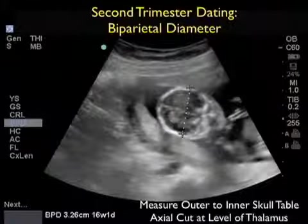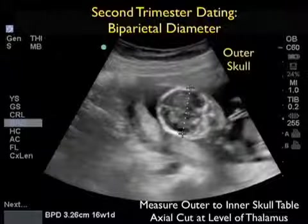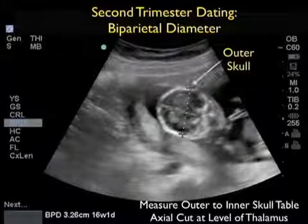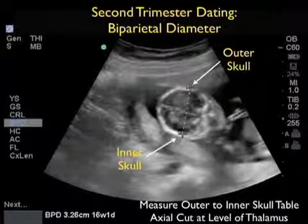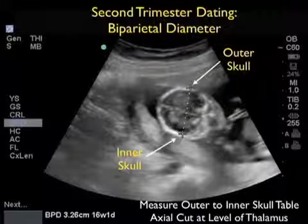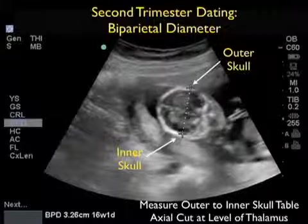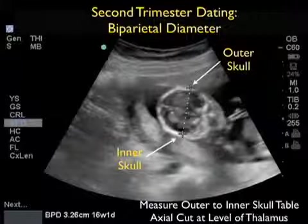In the second trimester, dating of gestational age focuses on skull circumference or measurement of the biparietal diameter. We want to measure the skull at about the level of the thalamus in an axial orientation with the face down. Here we're placing the calipers from the outer skull table proximally to the inner skull table distally, and we have a measurement of 3.26 centimeters correlating to a 16-week, 1-day gestational age.